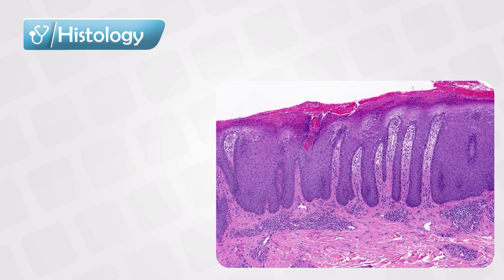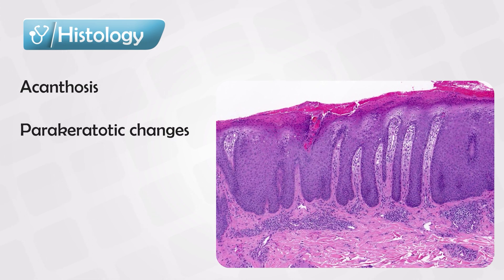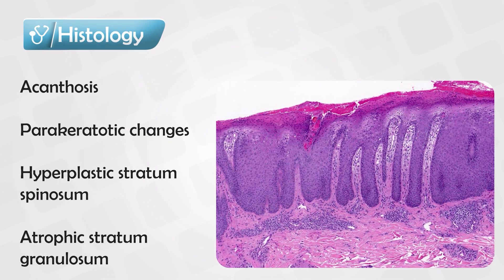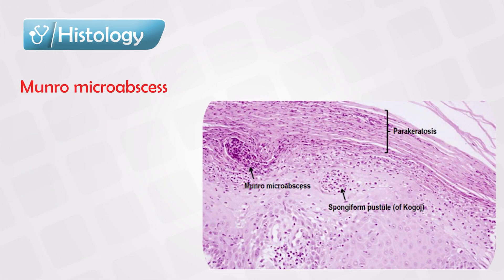If we take a sample and put it under the microscope, we will see acanthosis with parakeratotic changes, which means that the stratum corneum layer that is normally dead will have some living cells, evidenced by nuclei. There will also be an increase in the stratum spinosum layer and a decrease in the stratum granulosum layer. We can also see Munro microabscesses.